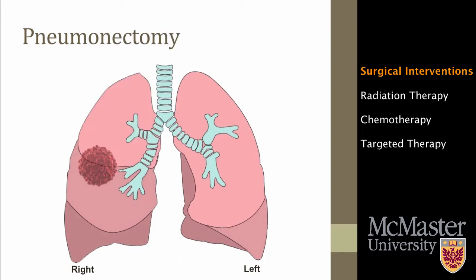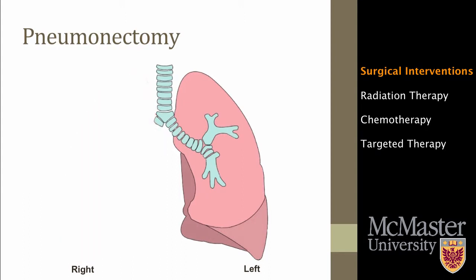The third is a pneumonectomy. This is when one whole lung is removed. Pneumonectomies are done when other, less invasive operations cannot be performed due to the size, location, or the number of the tumors — for instance, if the cancer has spread to several points in the same lung. Patients who have one of their lungs removed can still continue living and breathing with their remaining lung. However, this procedure is not recommended for patients above the age of 65.